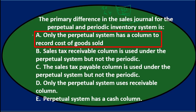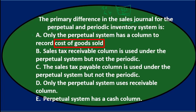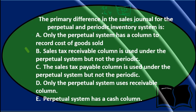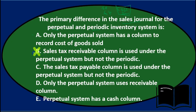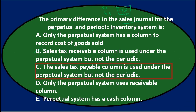A says only the perpetual system has a column to record cost of goods sold — that looks correct, though it should really say cost of goods sold and inventory. It might not be totally complete, but let's check the rest. B says the sales tax receivable column is used under the perpetual system but not the periodic — sales tax would be included in either system similarly, so that's not the key difference. C says the sales tax payable column is used under the perpetual system but not the periodic — again, the real difference is on the cost of goods sold and inventory side, not sales tax.